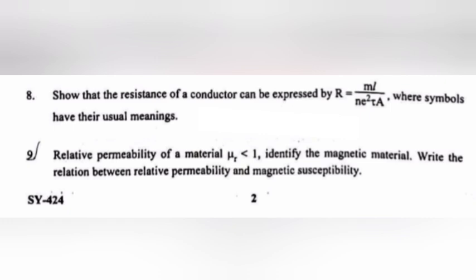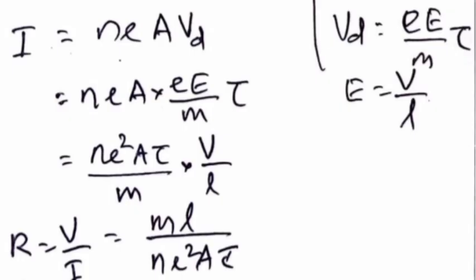Question 8: Show that the resistance of a conductor can be expressed by R is equal to M L by N square E A, where symbols have their usual meanings.